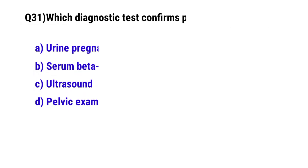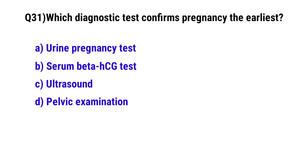Question No. 31: Which diagnostic test confirms pregnancy the earliest? The correct option is B: Serum beta-HCG test.